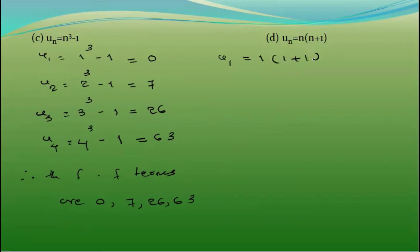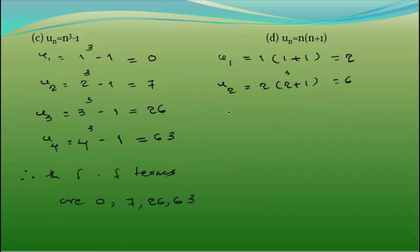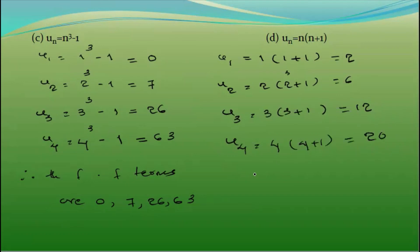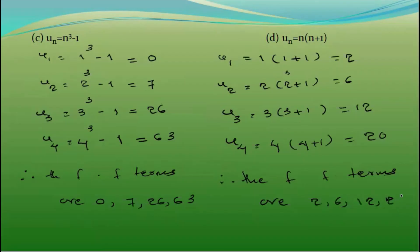U1 = 1 into (1+1) = 2. U2 = 2 into (2+1) = 6. U3 = 3 into (3+1) = 12. U4 = 4 into (4+1) = 20. Therefore the first four terms are 2, 6, 12, 20.